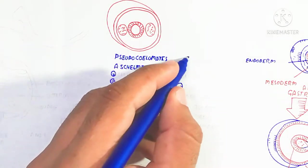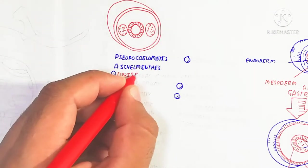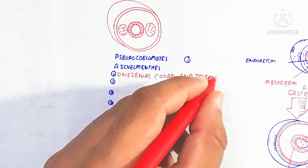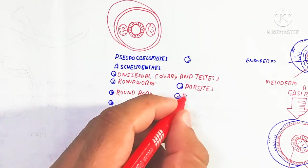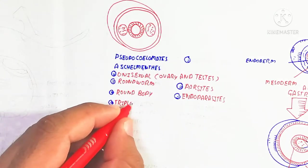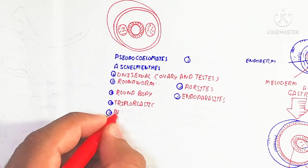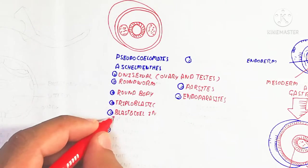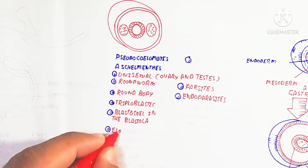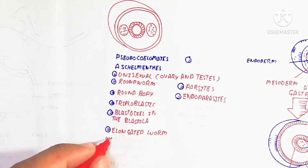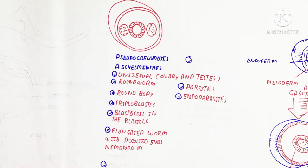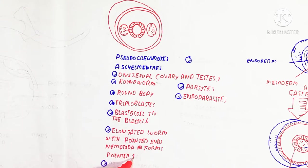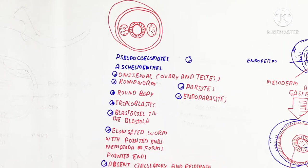Pseudocoelomates have a false body cavity. They are unisexual with ovary and testis present. The nematode, also known as a roundworm, is a parasite that depends on a host. It is triploblastic, meaning three germinal layers — ectoderm, endoderm, and mesoderm — are present during the embryonic stage. The blastocoel is formed when the blastula forms, known as the blast body cavity.